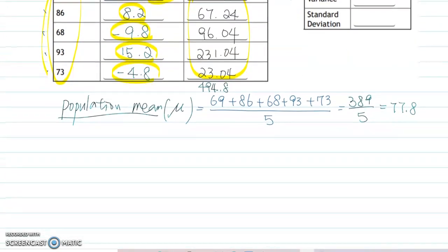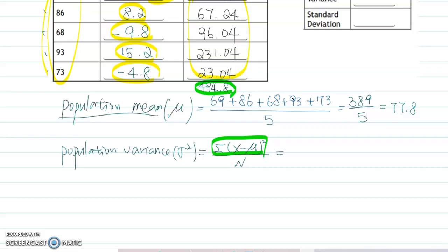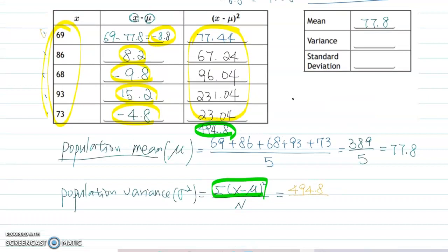So now the formula to calculate the population variance. The notation is σ² (sigma squared). That is sum of (x minus μ)² divided by the population overall data set. So remember we calculated this value already, which is 494.8. So 494.8. Then how many number of data? One, two, three, four, five. So divide by 5. Then you got 98.96. That's the population variance. So the second answer, the variance becomes 98.96.